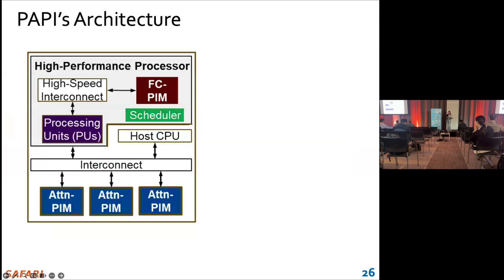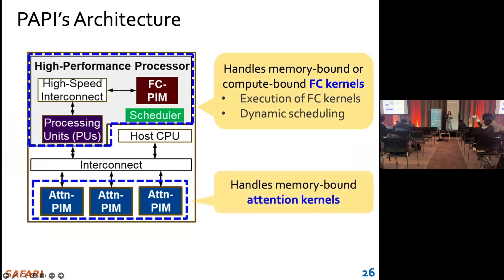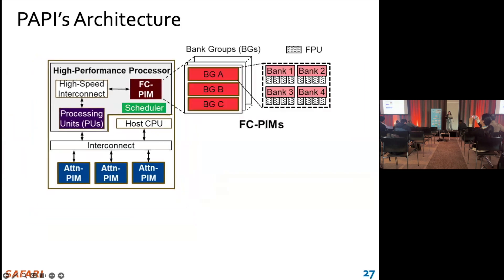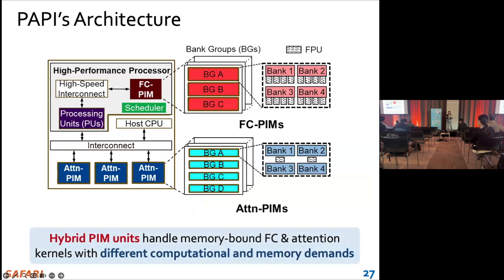Here is the PAPI architecture. In this architecture, we have a high-performance processor to handle memory-bound or compute-bound FC kernels, and we have attention PIM to handle memory-bound attention kernels. As you can see, there are FC PIM and attention PIM in the architecture. The hybrid PIM units handle memory-bound FC and attention kernels with different computational and memory demands.